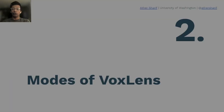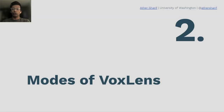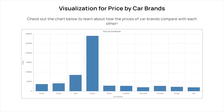With VoxLens integrated, when a user comes across an online data visualization, they would hear: 'Graph with title, price by car brands. To interact with the graph, press Ctrl+Shift+A or Ctrl+Shift+1. You'll hear a beep sound, after which you can ask a question such as what is the average or what is the maximum value. To hear the textual summary, press Ctrl+Shift+S or Ctrl+Shift+2. To hear the audio graph, press Ctrl+Shift+M or Ctrl+Shift+3. To repeat these instructions, press Ctrl+Shift+I or Ctrl+Shift+4.'